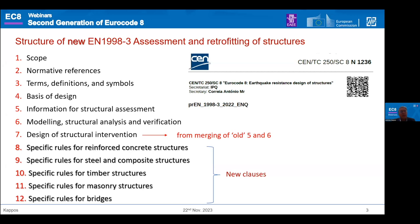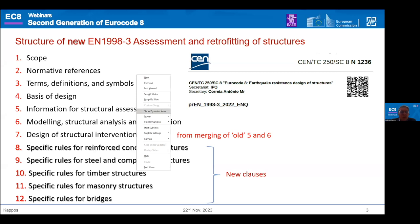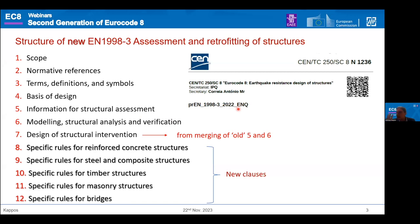The design of structural interventions, which I will present later after Tatiana introduces the analysis clauses, is a merger of the old clauses 5 and 6, which were very short and we saw no real reason for keeping them separate. This document — the ENQ version — is what this presentation and all the other presentations are based on. We are expecting a number of comments, after which we will come up with the final version of the code for voting.